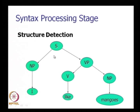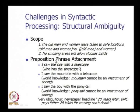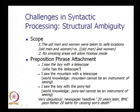The challenges that come in syntactic processing are known as structural ambiguities. The first challenge is scope ambiguity. Consider the sentence: 'The old men and women were taken to safe locations.' The question is — who is old? Are both men and women old, or only the men? The adjective 'old' qualifies an uncertain amount of text. This is the scope ambiguity: what is the region of influence, or scope, of the adjective 'old' in the sentence?